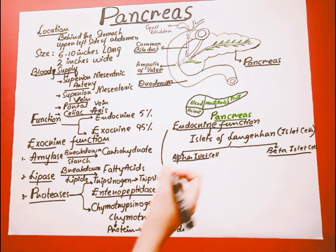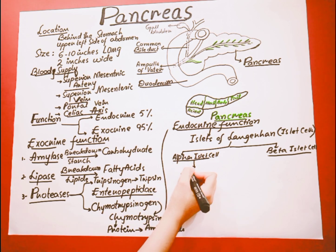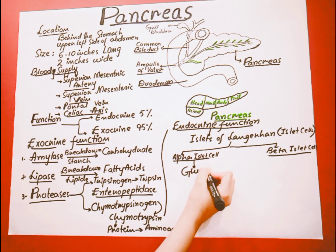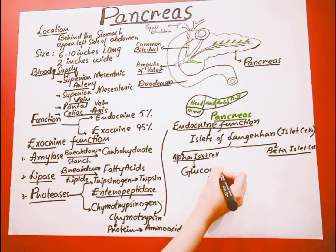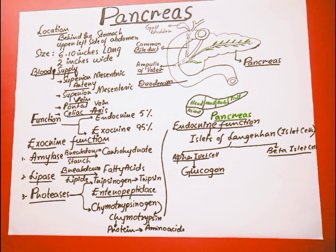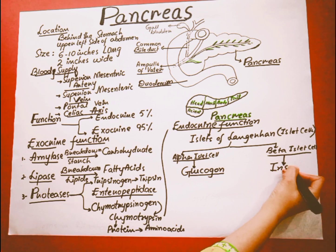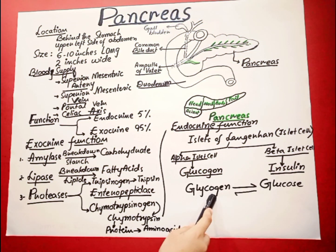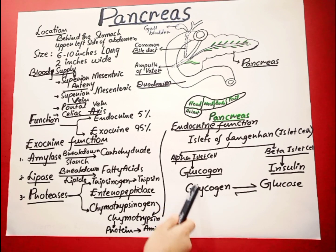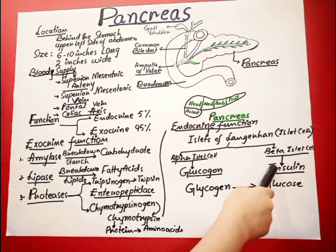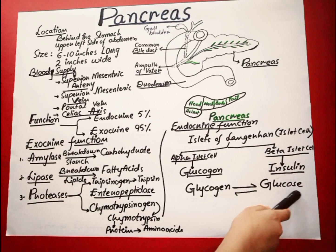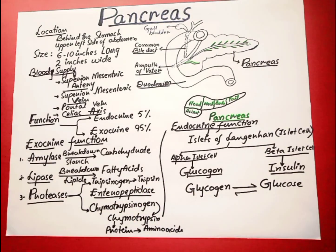The alpha islet cells release a hormone called glucagon, which converts glycogen into glucose. The beta islet cells release insulin. This is a reversible process: glucagon hormone converts glycogen into glucose, while insulin suppresses the production of glucose, stimulates glucose uptake in muscles, and suppresses adipose tissue lipolysis.